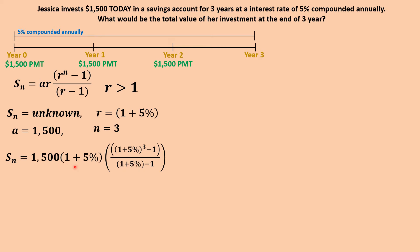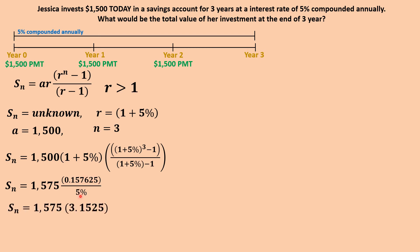Simplifying: 1,500 × 1.05 = 1,575. Then (1.05³ − 1) = 0.157625; dividing by 5% gives 3.1525. Multiplying 1,575 × 3.1525 gives $4,965.19 — the same answer we got before. This confirms the geometric series equation we derived can solve the simple annuity due question.